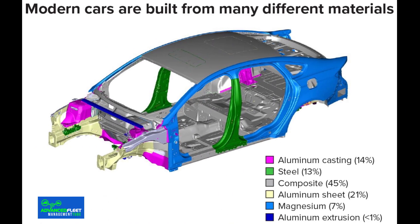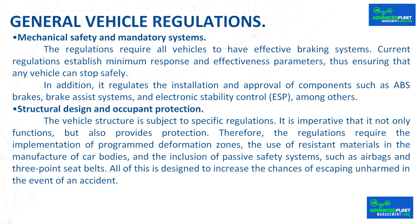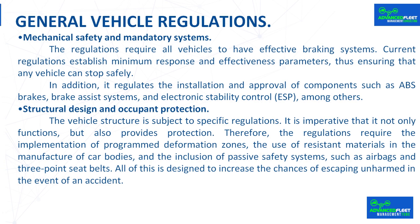Structural design and occupant protection. The vehicle structure is subject to specific regulations — it must not only function but also provide protection. Therefore, the regulations require the implementation of programmed deformation zones, the use of resistant materials in the manufacture of car bodies, and the inclusion of passive safety systems such as airbags and three-point seat belts, all designed to increase the chances of escaping unharmed in an accident.